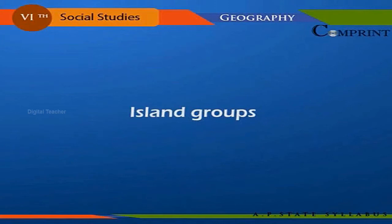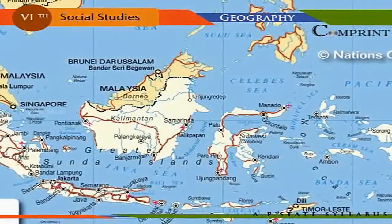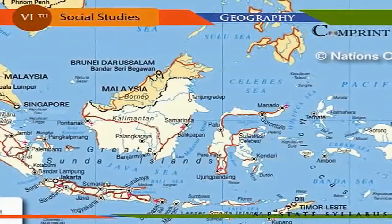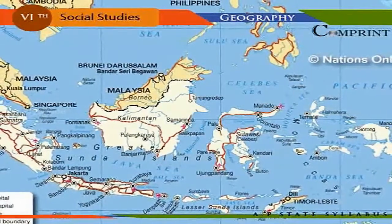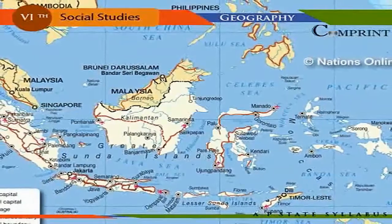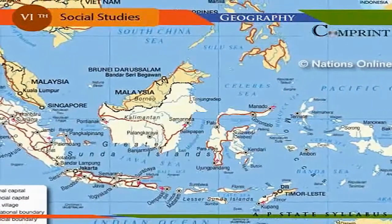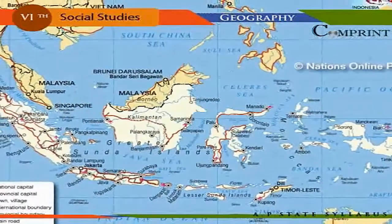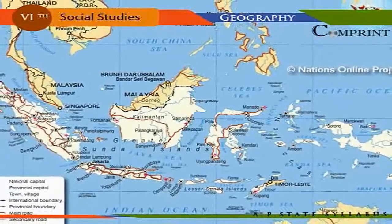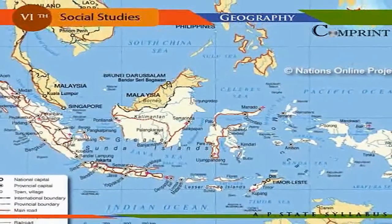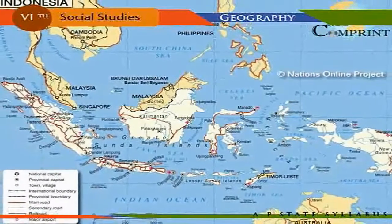Indonesia is the largest island group in the world, consisting of 13,500 islands. Japan and the Philippines are also groups of islands. The Andaman-Nicobar and Lakshadweep are the important groups of islands in India.